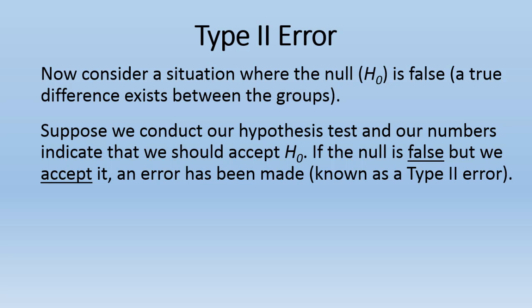So if the null is false, but we accept it, an error has been made, and that's known as a Type II error.